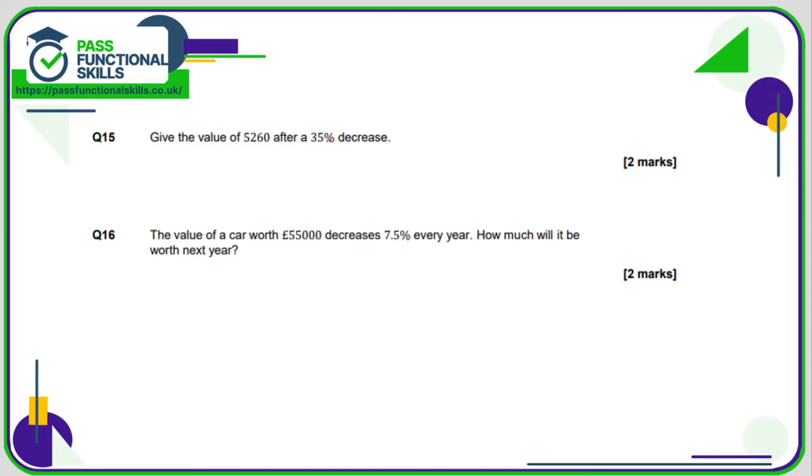Here we want a 35% decrease. So let's work out 35% first of all. So 10% is 526. 5% is therefore 526 divided by 2, which is 263. So 35%, that's going to be a 30% plus a 5%. I've worked out 5%, 263. Time to work out 30%. Well, if 10% is 526, then 30% is going to be 3 times that figure, which is 1578. So therefore 35% is going to be these two amounts combined. And that comes to a total of 1841. And all we need to do is subtract that from the 5260. And we get a total of 3419.